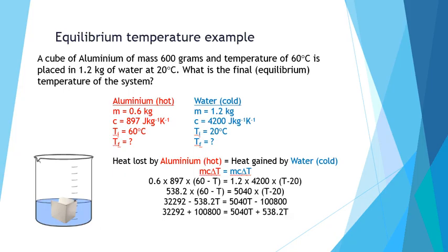Next we group our like terms. We bring our T's across. So I've added 538.2T to both sides to bring it over to the right, and I've added 100,800 to both sides to bring that across to our left. Now we've got our numbers on the left hand side of our equals symbol and our T terms on the right hand side, which we can simplify further.